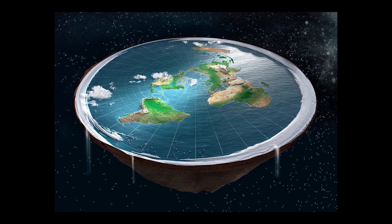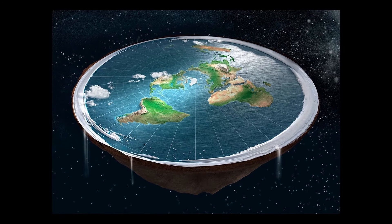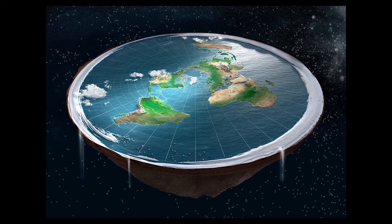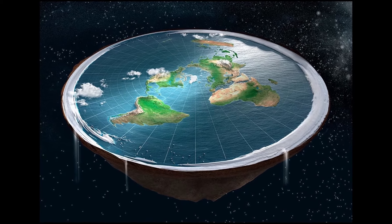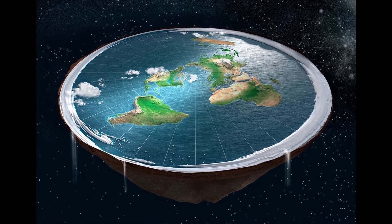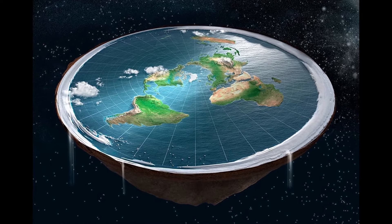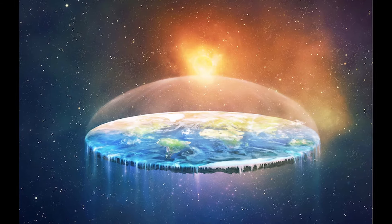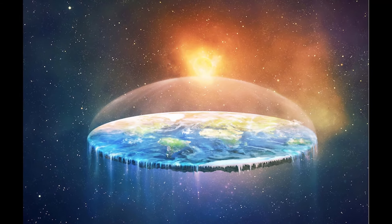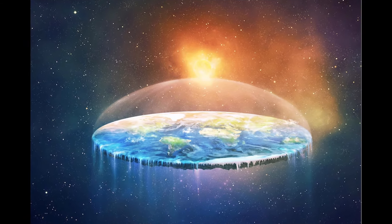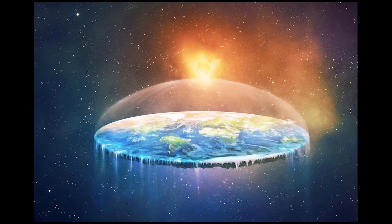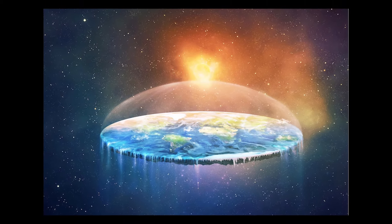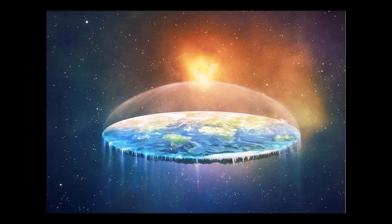Perhaps the most famous of all conspiracies, Flat Earth theory posits that our planet is a flat disk, rather than a globe, surrounded by an ice wall that contains the oceans. Proponents argue that satellite images and space exploration are part of a vast conspiracy to deceive the public about Earth's true shape.